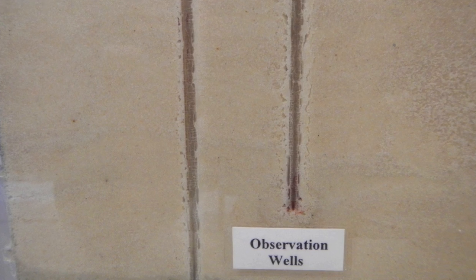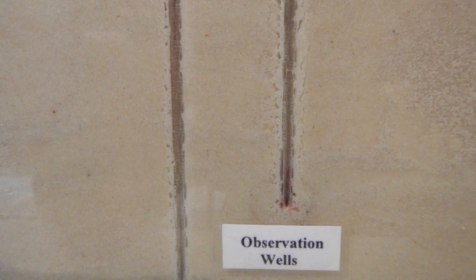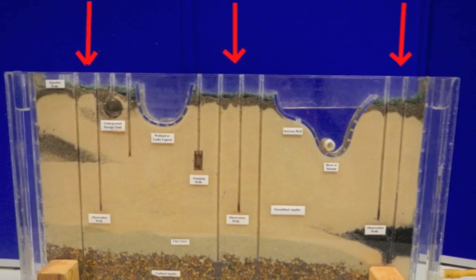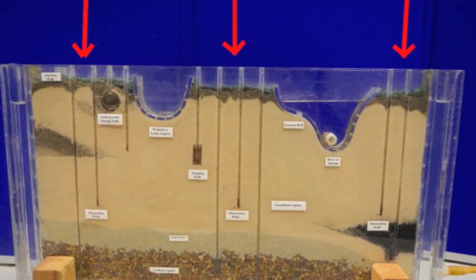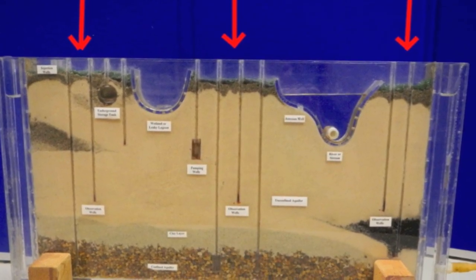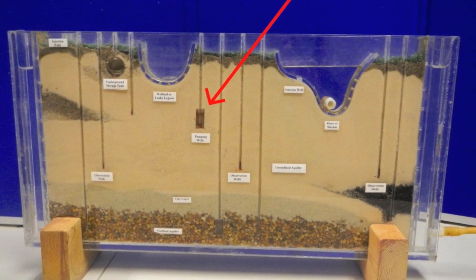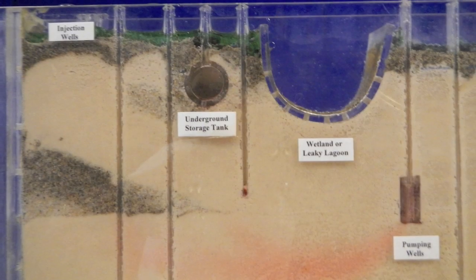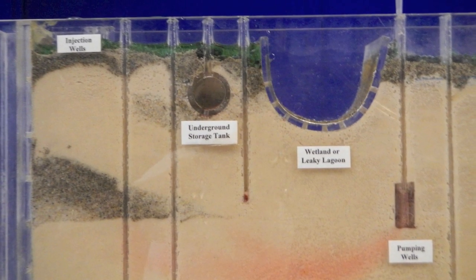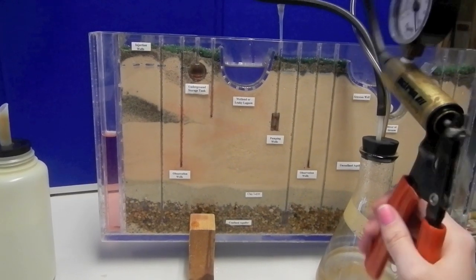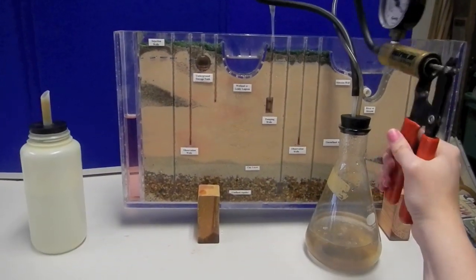Observation wells are viewable from the front of the model. Water table levels are observed through these transparent wells. Dyes should not be injected directly into them. Three observation wells are located on the left side of the model, one in the middle and two on the right. The pumping wells are identified by the rectangular casing at their base. These fine poured casings filter out grains of sand and sediment as water is pumped from the well. Dye should not be injected into the pumping wells.